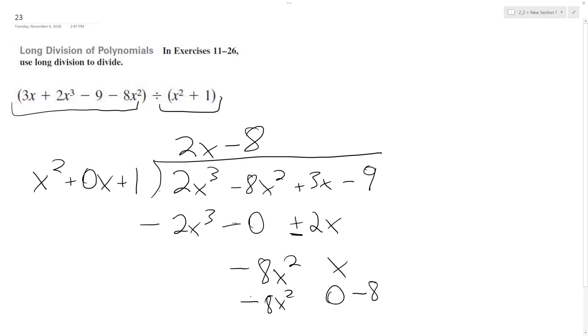So change the signs becomes plus, plus, this is a positive x here. And then negative 9 plus 8, negative 1. So we do get x minus 1 as a remainder.